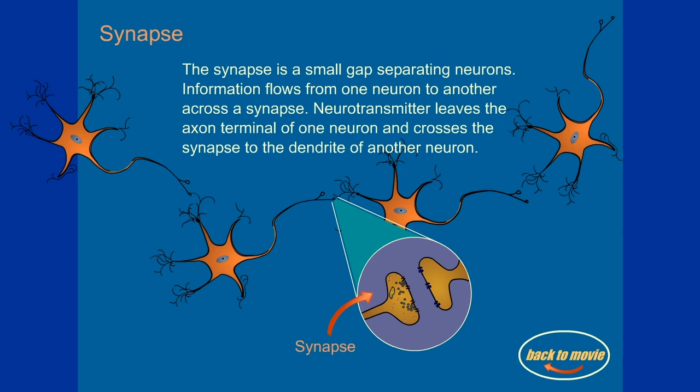Synapse. The synapse is a small gap separating neurons. Information flows from one neuron to another when we cross the synapse. Neurotransmitter leaves the axon terminal of one neuron and crosses the synapse to the dendrite of another neuron.